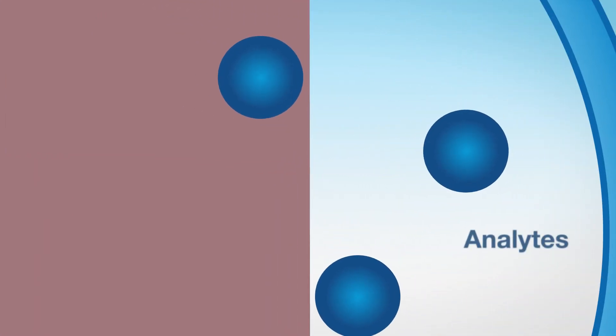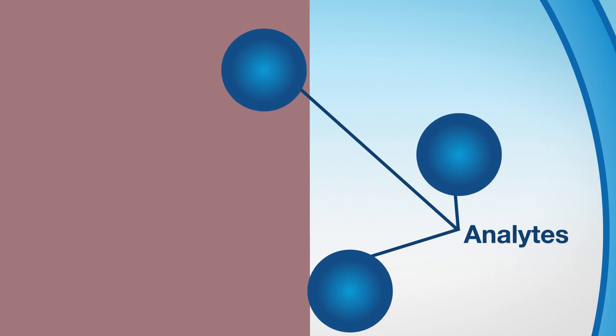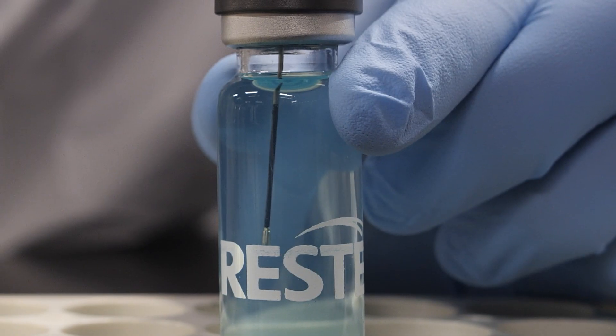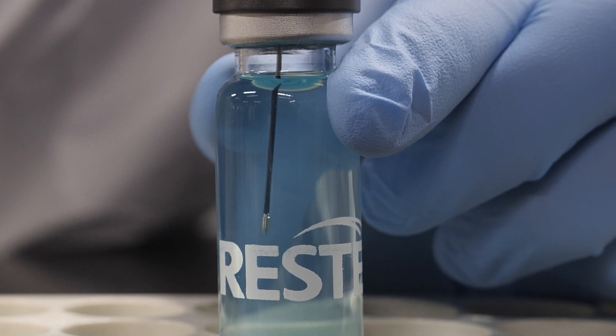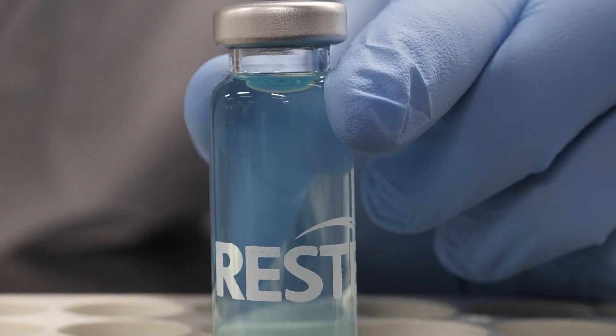When the SPME coating is exposed to the sample matrix, analytes are extracted onto and into the coating. The extraction continues until either the coating is withdrawn from the sample or until equilibrium is reached.